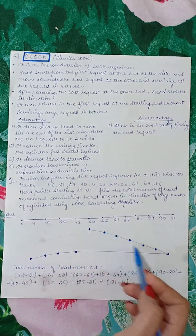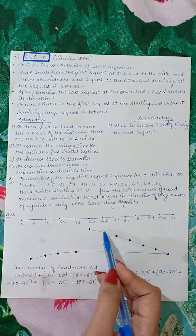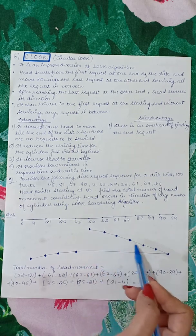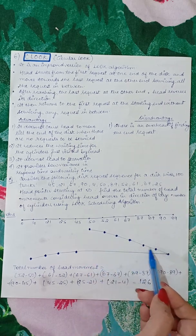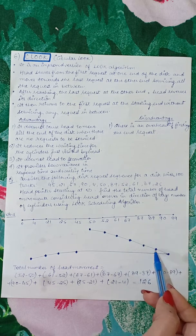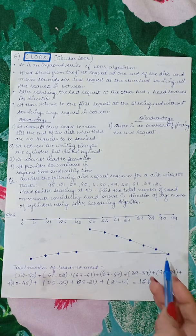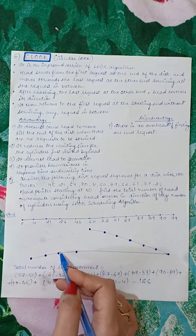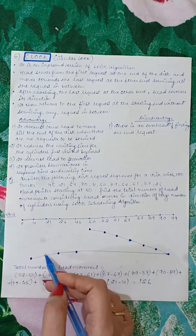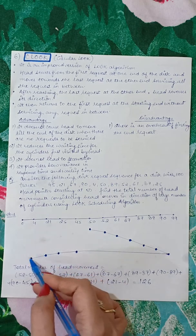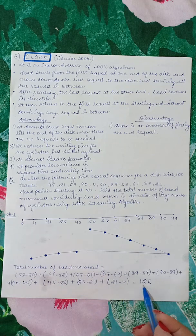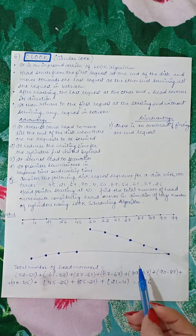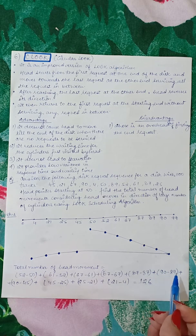The differences are calculated as follows: (52−50) + (61−52) + (67−61) + (87−67) + (89−87) + (90−89) + (90−45) + (45−25) + (25−21) + (21−4). Adding all these values gives a total of 126. So the total number of head movements in the LOOK scheduling algorithm is 126.